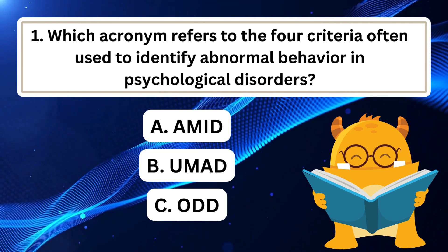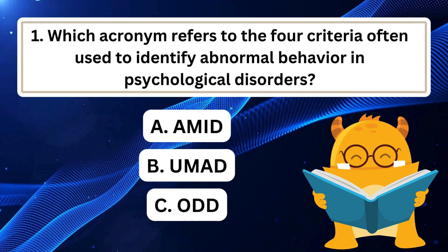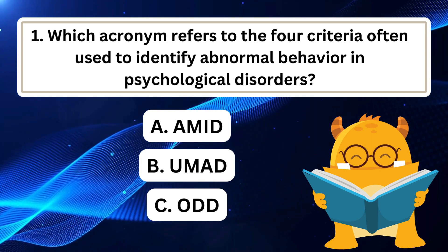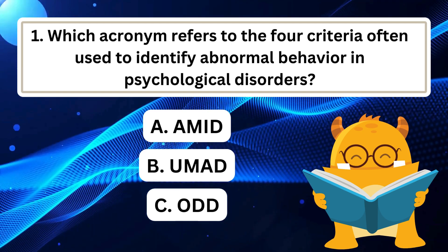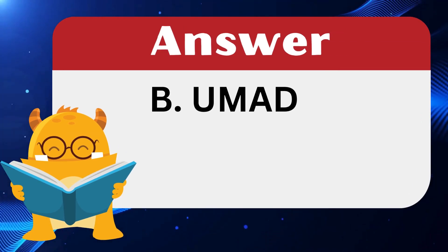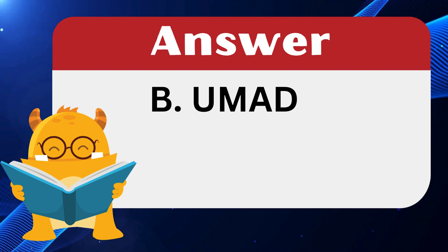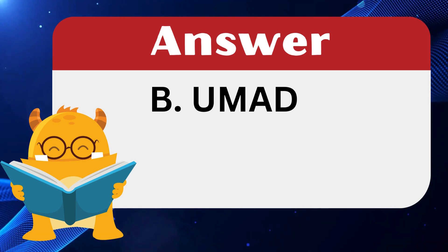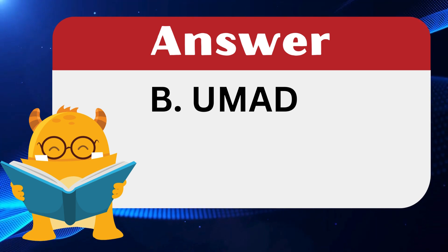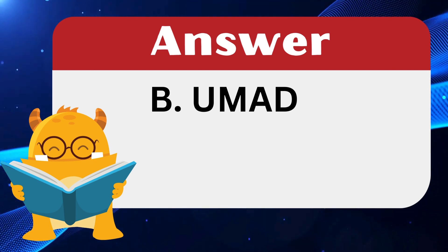Question 1: Which acronym refers to the four criteria often used to identify abnormal behavior in psychological disorders? The answer is B: UMAD. UMAD stands for unjustifiable, maladaptive, atypical, and disturbing — the four criteria used to determine abnormal behavior in psychological disorders. These factors help professionals assess whether behavior falls outside the normal range, considering its justification, adaptation, typicality, and disturbance.